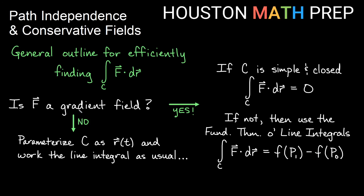If your vector field is not a gradient field, you'll need to parameterize your curve, write it as r(t), find m and n, find dx and dy, and work the line integral as usual — unless your curve is closed. If your curve is closed and it's not a gradient field, we still have one shortcut left: Green's Theorem. That's our next video. Thanks for watching, everyone. We'll see you then.